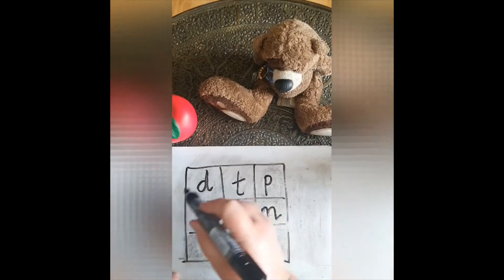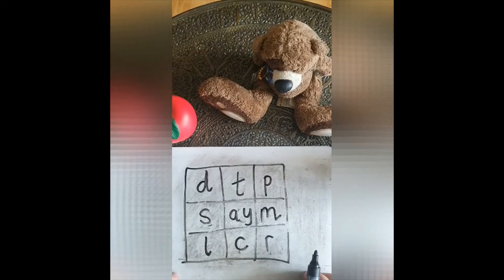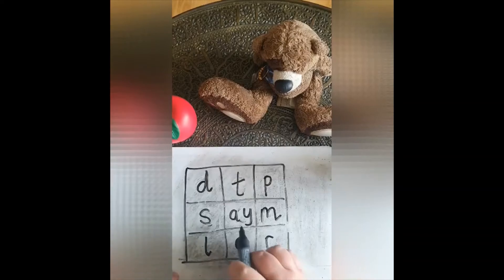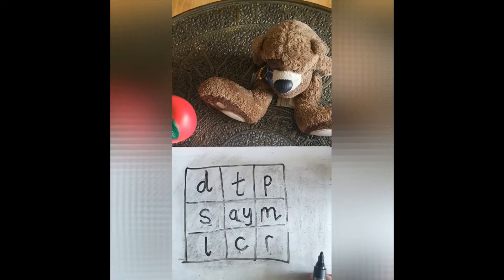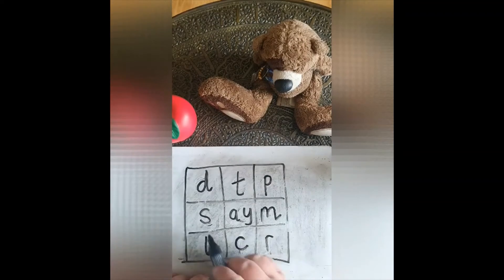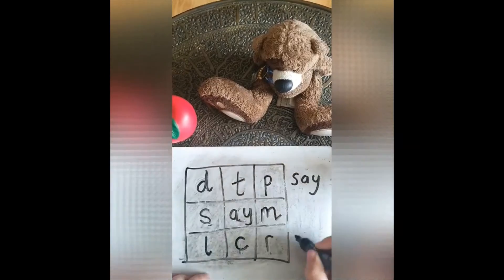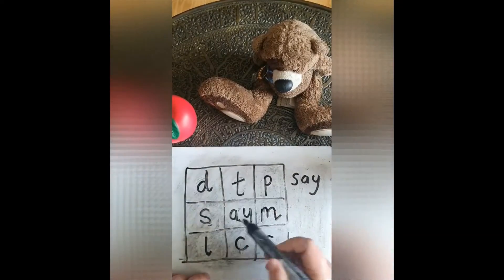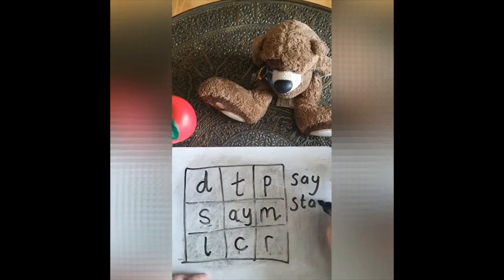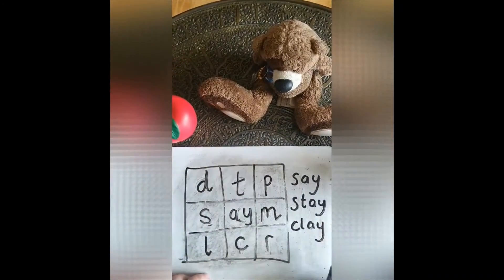Using the same principle as before, you can actually start to work on particular sounds or spelling patterns. Same thing — just set it up, put the sound in the middle, give your child 30 seconds or one minute, however long you want, and just leave them to find as many words as they can. They might start with simple two-sound words like 'say', then they might say, 'I've got say, I can get stay,' and then, 'Oh, there's clay.' So it's just using that sound pattern to help with their spelling.